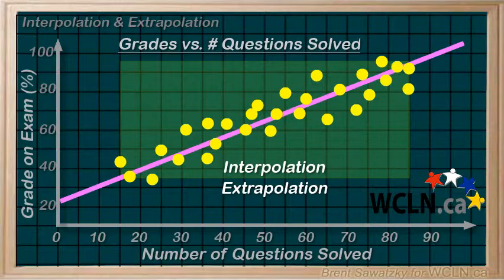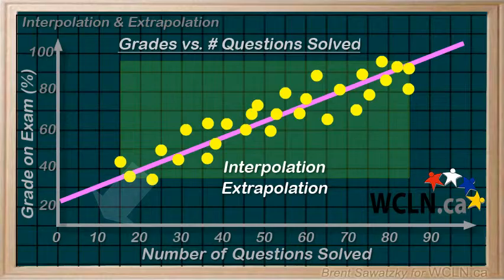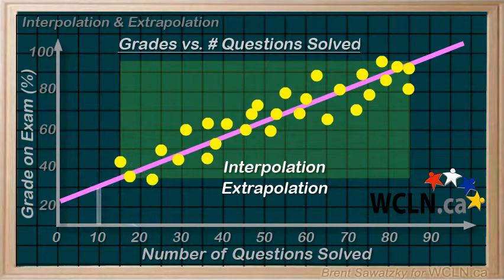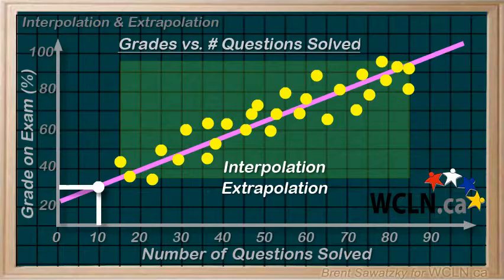Another, what is the expected score for a student who did 10 questions? Okay, so we can identify 10 on the x-axis and follow it up and along and we'd predict a score of about 30%.